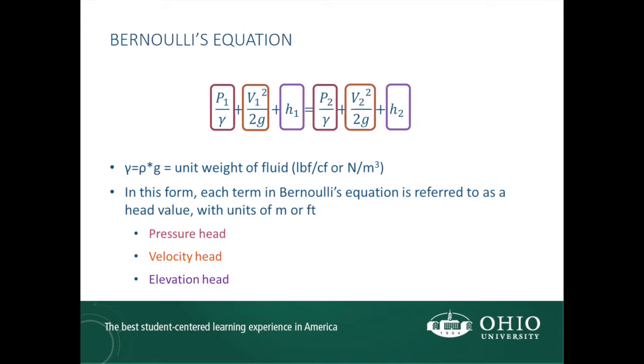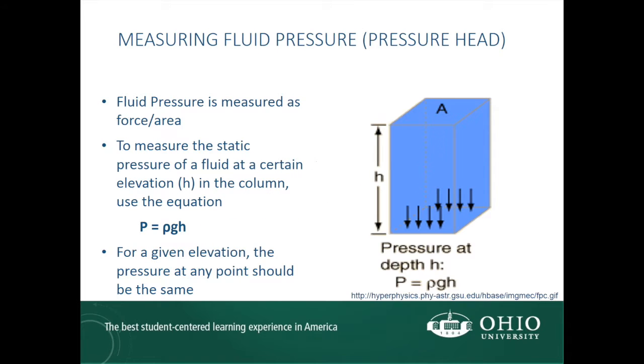In order to be able to use this equation, we must have values for pressure, velocity, and elevation. Fluid pressure can be calculated at any elevation within a water column using the hydrostatic pressure formula: p equals rho times g times h. According to this relationship, the hydrostatic pressure for a given fluid at any points with the same elevation should be the same because density and acceleration due to gravity are constant.